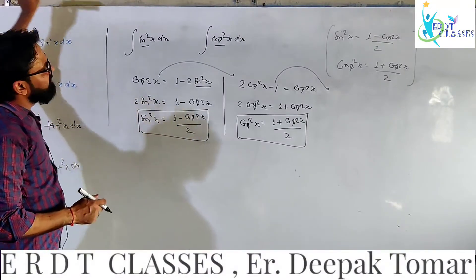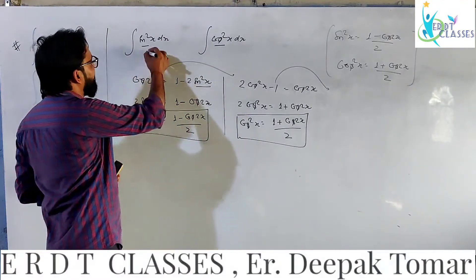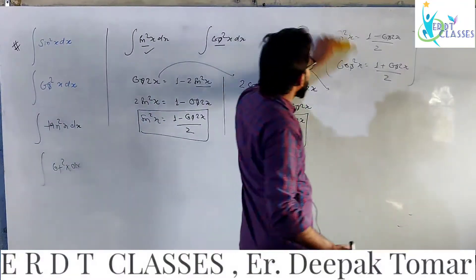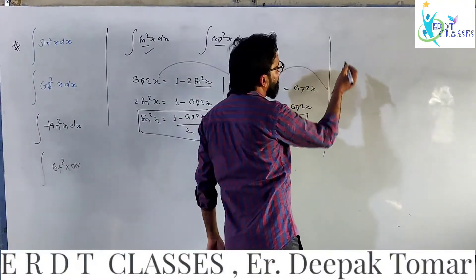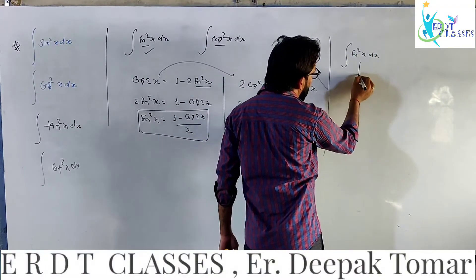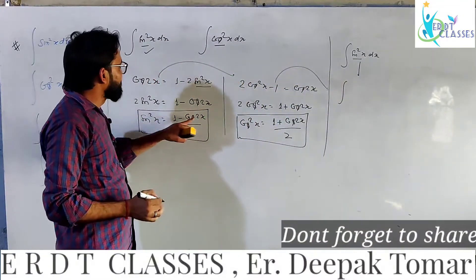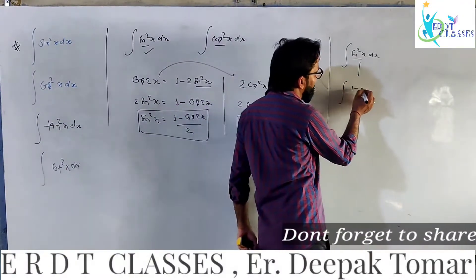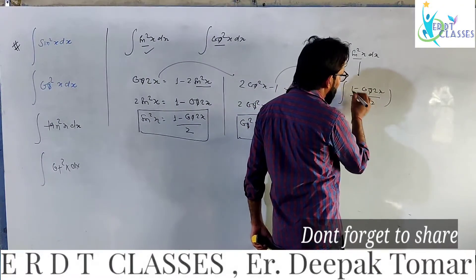Now we are going to do the integration. We will do the integration of sin square x. You can substitute sin square x with (1 minus cos 2x) over 2. So the integral becomes the integral of (1 minus cos 2x) over 2 dx.